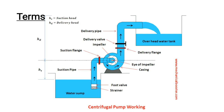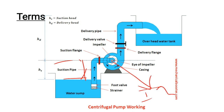Now we will see the terms used in the centrifugal pump. First is the suction head — this is the vertical distance between the water surface and the centerline of the pump impeller. The impeller and casing are key components shown in the diagram. The suction head is this vertical distance from the water level to the impeller.